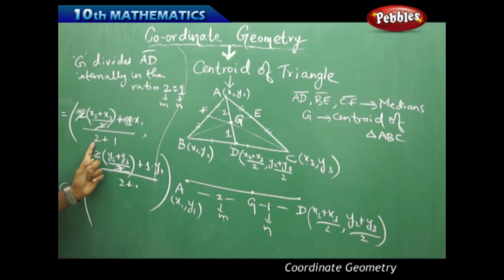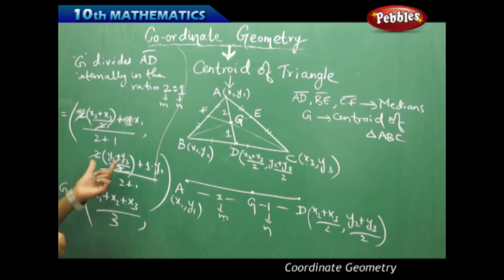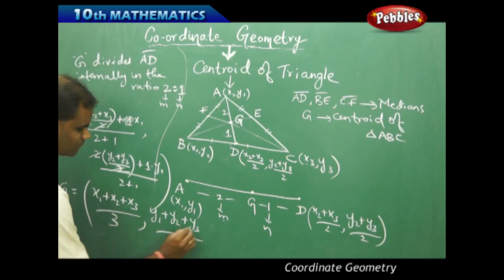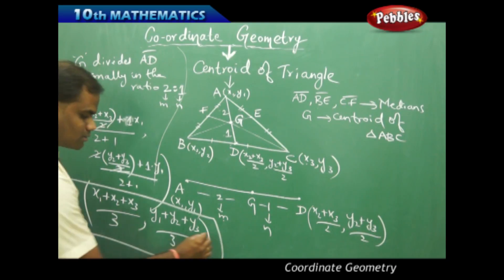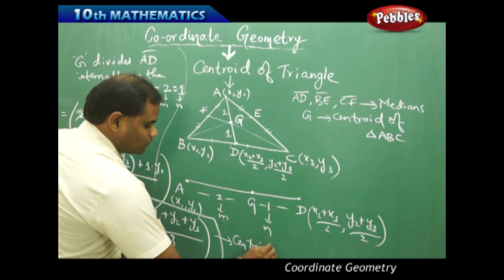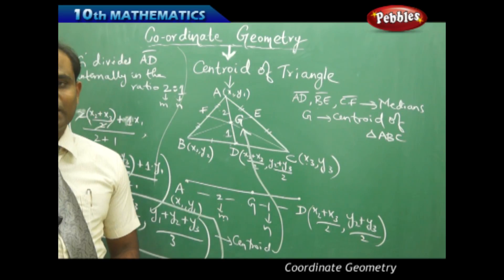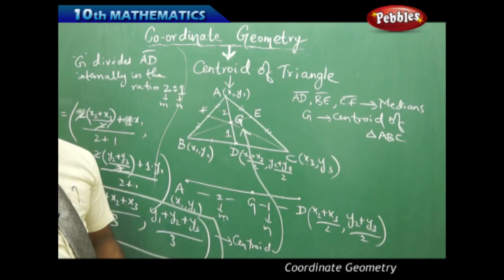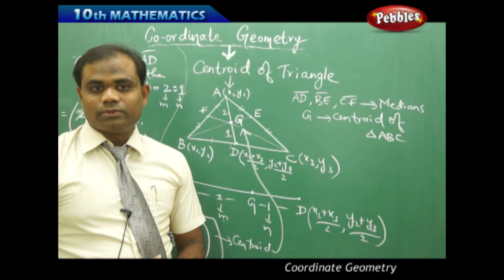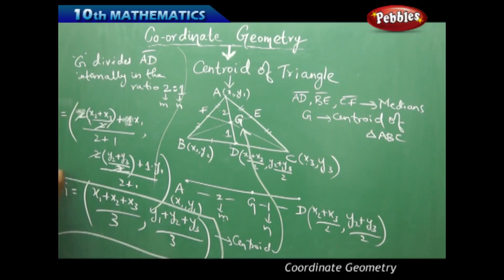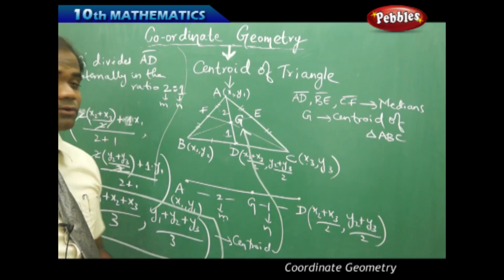Therefore the centroid G simplifies to ((x1 + x2 + x3)/3, (y1 + y2 + y3)/3). This is the formula for the centroid of triangle ABC, derived using the property that the centroid divides the median in the ratio 2:1.